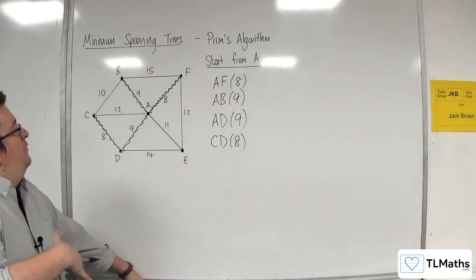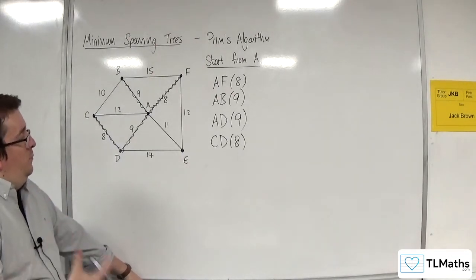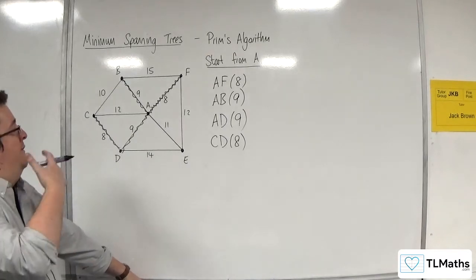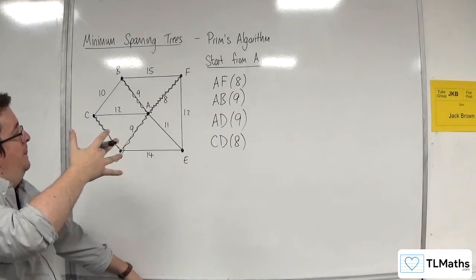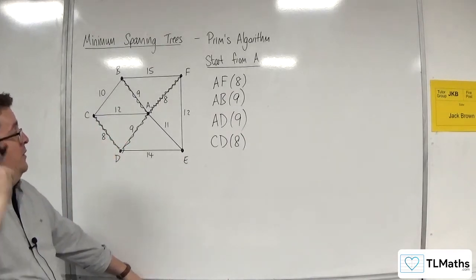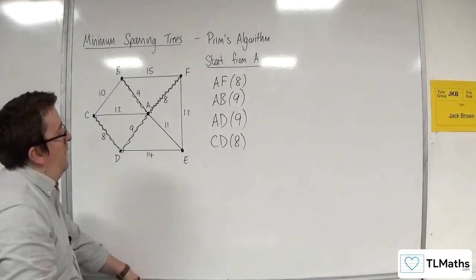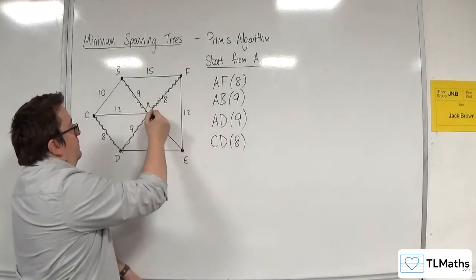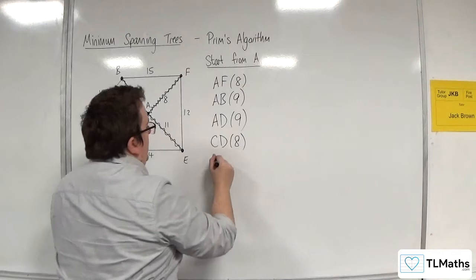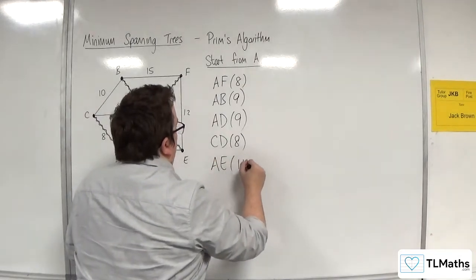I am now looking for the shortest weight, or the one with least weight, coming out of A, B, C, D, or F, that doesn't create a cycle. And the one that connects E would be A, E. So A, E with 11.